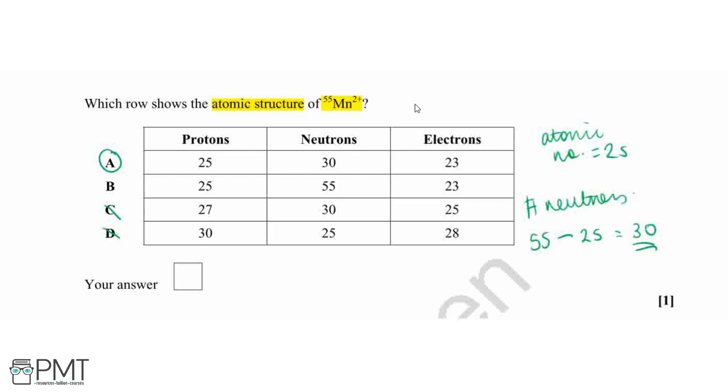And we can confirm this with our number of electrons. Our number of electrons in a neutral atom is going to be equal to the number of protons. However, we've got a 2 plus charge. Therefore, the number of electrons in our ion is going to be 25 subtract 2, because we've got a 2 plus charge, which gives us 23 overall. Therefore, our answer is option A.